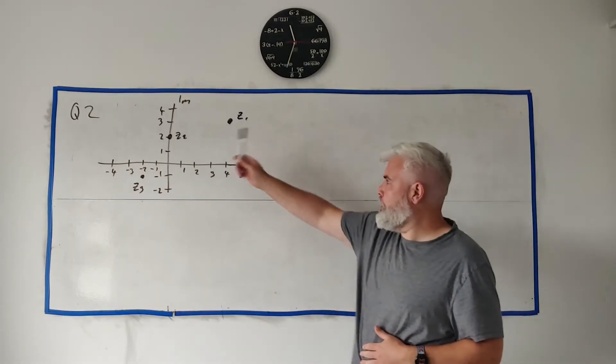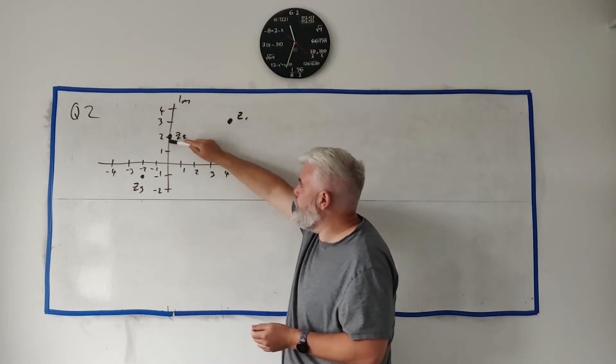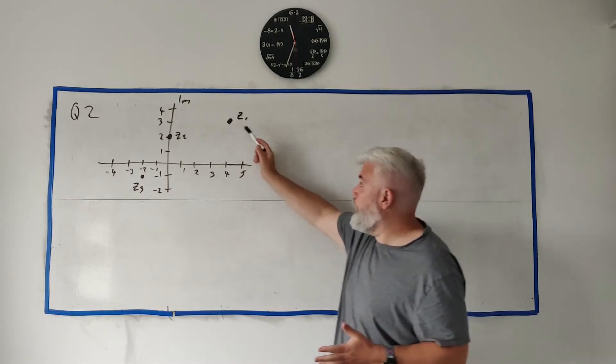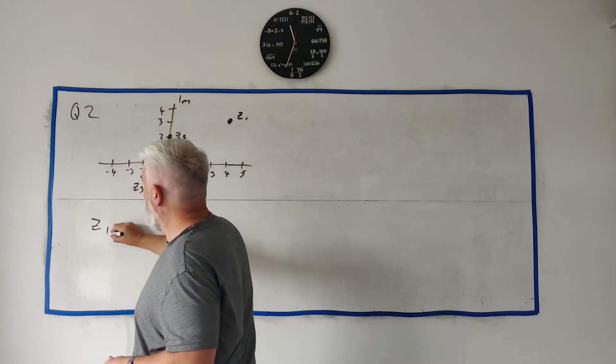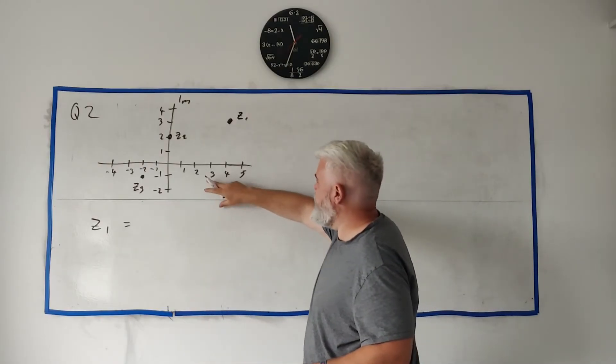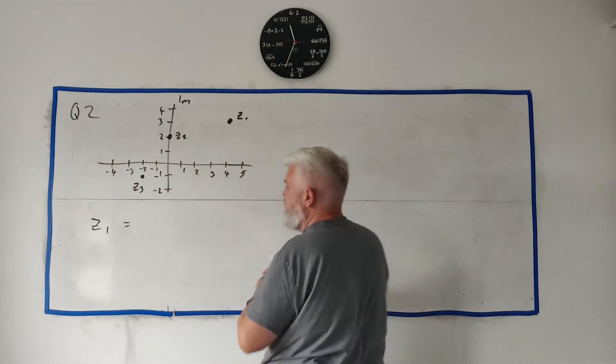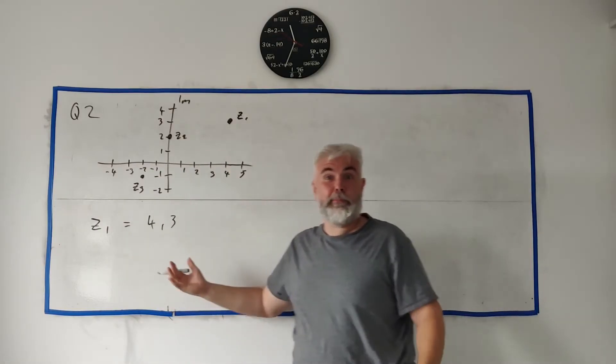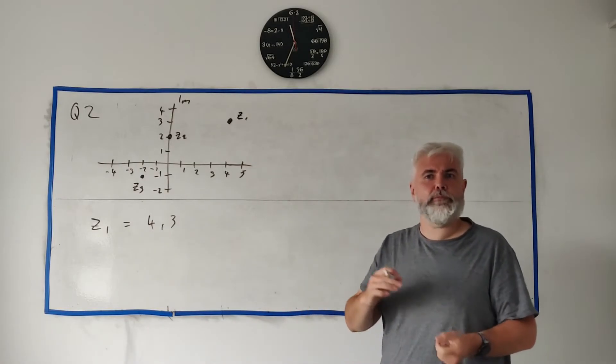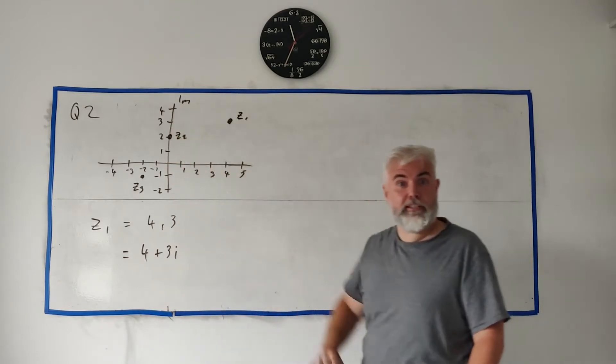In question 2 the examiner draws this Argand diagram for you and it has three points on it. It has Z1 up here, Z2 and Z3 and then for its question it simply asks you to write down the values of Z1, Z2 and Z3. First of all let me write the wrong answer. What a lot of students write is 4, 3. Most students are pretty good at reading these diagrams at this stage. They read 4 and they read 3. So some students write down 4, 3. You'll probably get half a mark. It's wrong. It's not in the form they want.